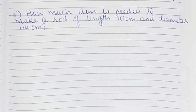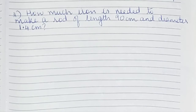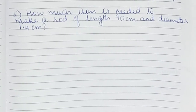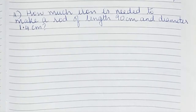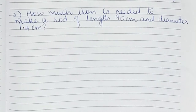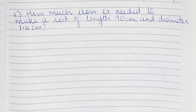Now let us start with the word problems. We know how to solve the volume sums, so now we will solve the word problems. The first word problem: how much iron is needed to make a rod of length 90 centimeters and diameter 1.4 centimeters?